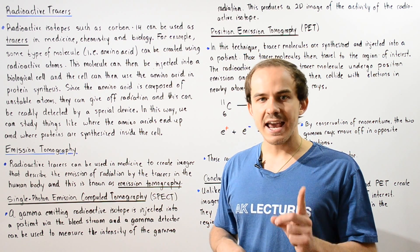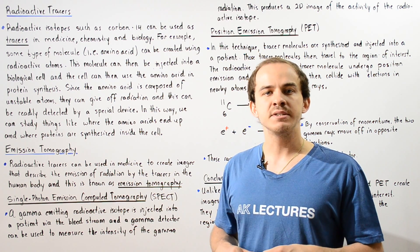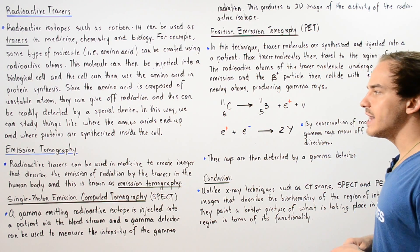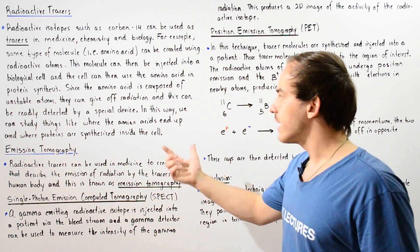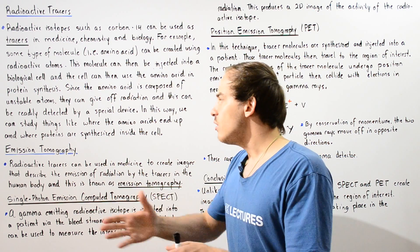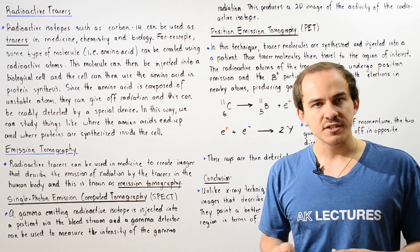This radiation can be readily detected by using some type of device or instrument. In this way, we can study things like where those amino acids actually end up within the cell and where proteins are synthesized.